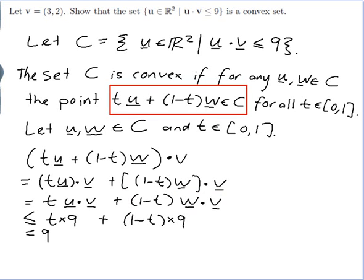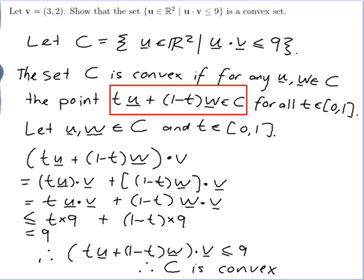So therefore [tu + (1-t)w]·v is less than or equal to 9, so therefore C is convex because that's what we had to show to make it convex.